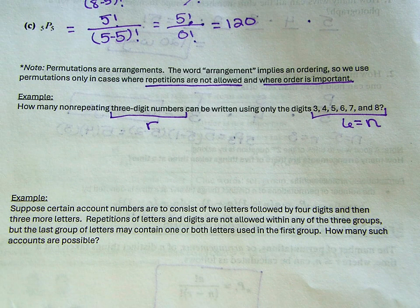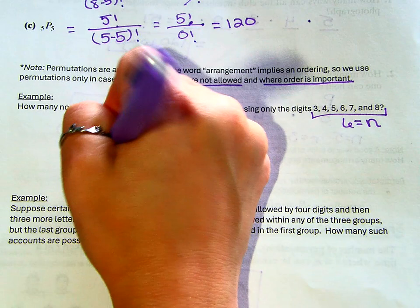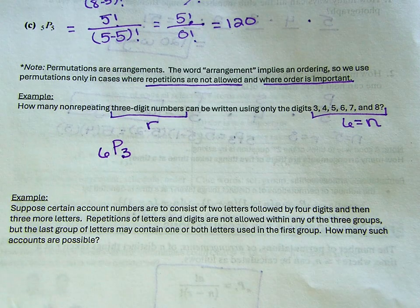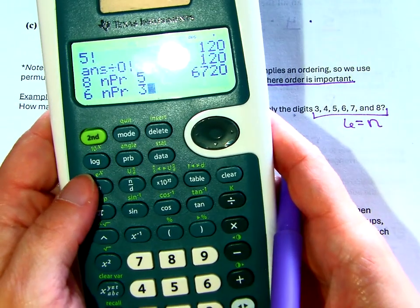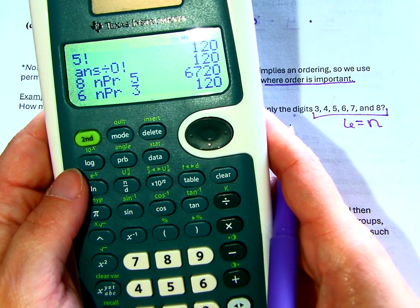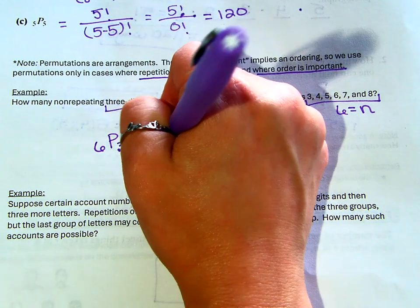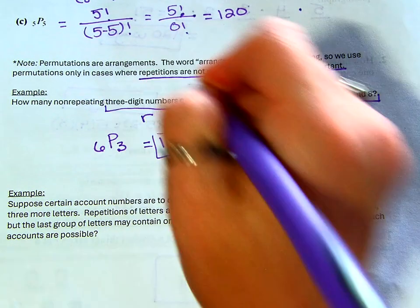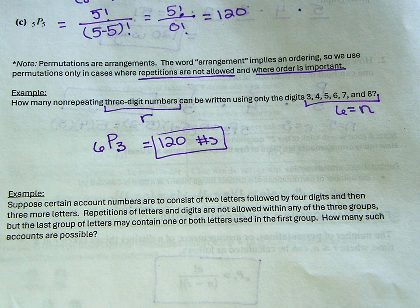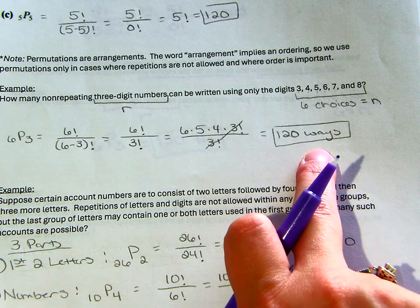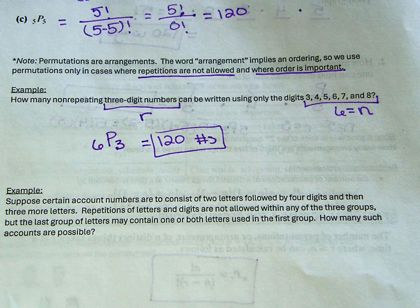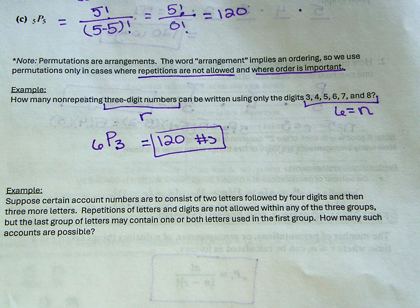So we take 6P3. Using the calculator: 6P3 equals 120. There are 120 different three-digit non-repeating numbers consisting only of the digits 3 through 8. The longer method: six factorial over three factorial — the three factorial cancels out, leaving five times three times four, which is still 120. Permutations: no repetition, order is important.